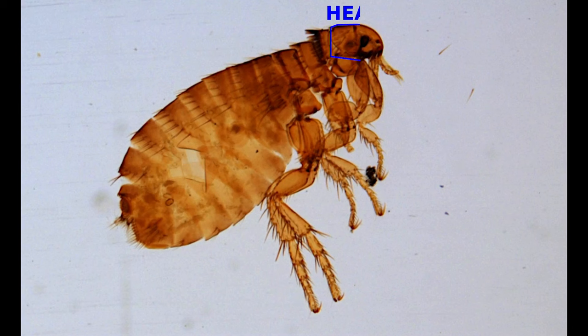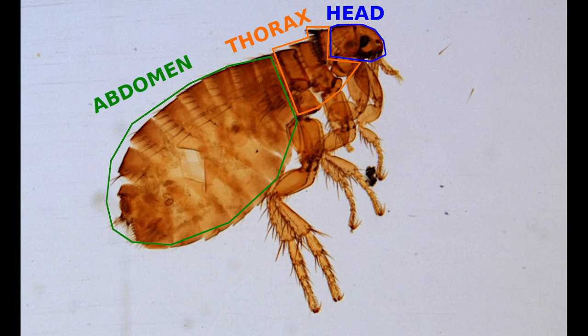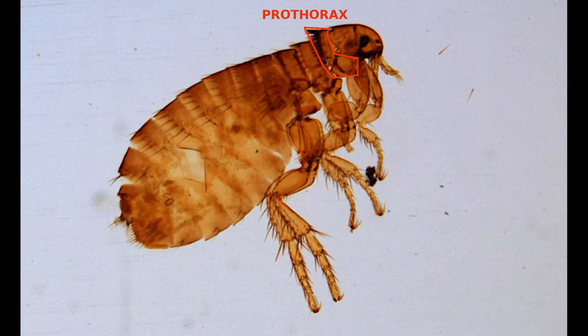The thorax consists of three segments, each with a pair of legs. These segments are called the prothorax, which is the first segment, the mesothorax in the middle, and the metathorax just before the abdomen.